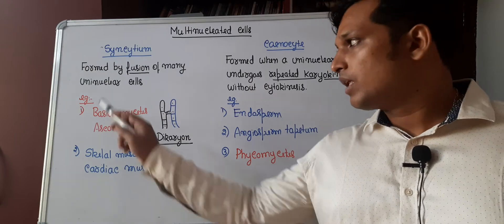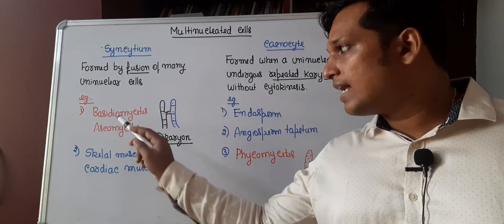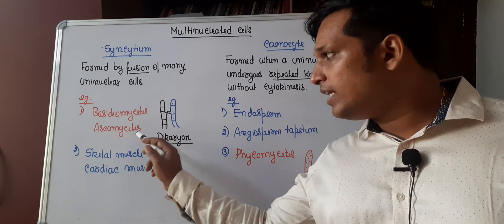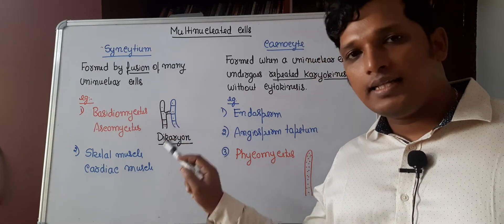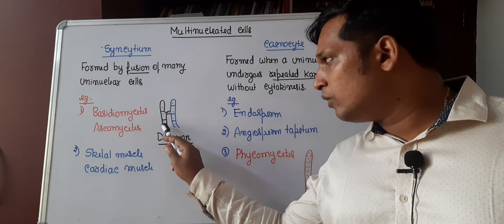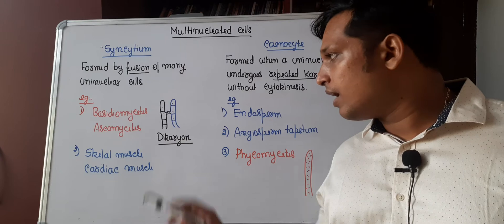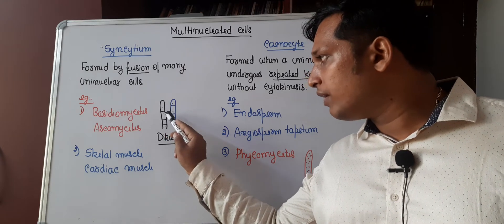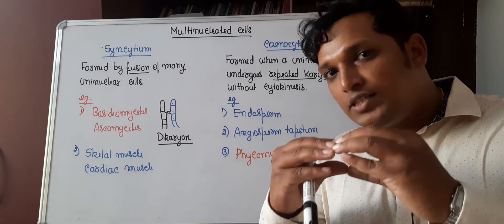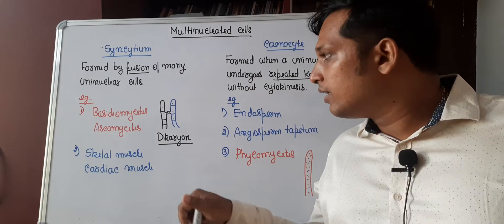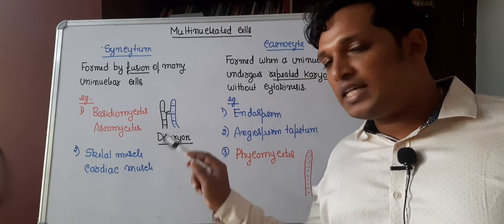What are the examples? In class Basidiomycetes and class Ascomycetes, during sexual reproduction, their hyphae have uni-nucleated cells because they have septa. Two compatible hyphae fuse and the wall between them gets dissolved, so cell fusion has occurred.